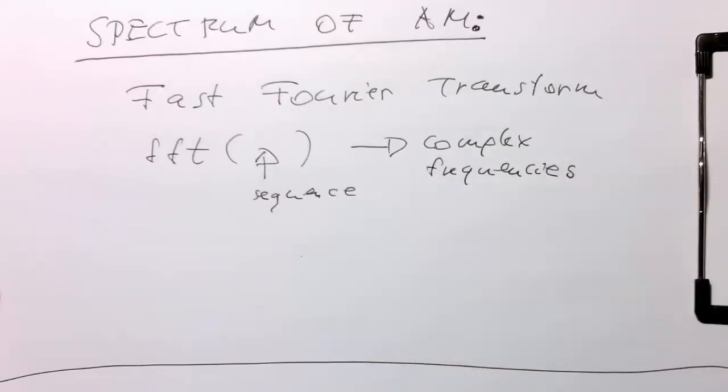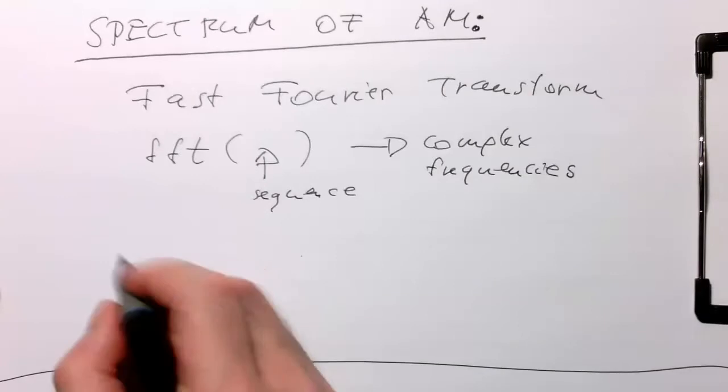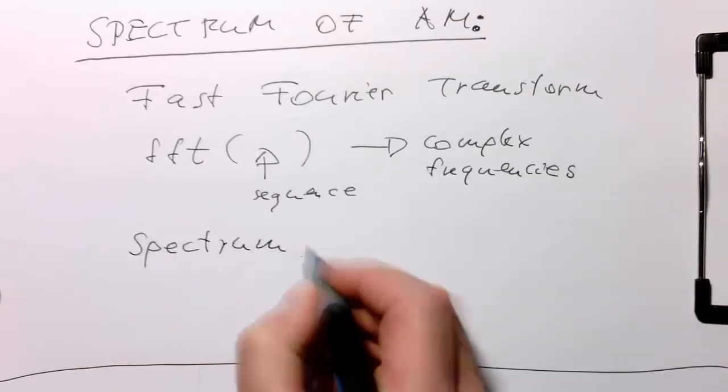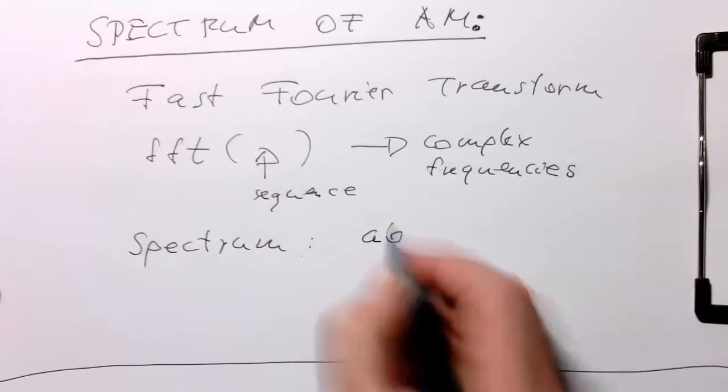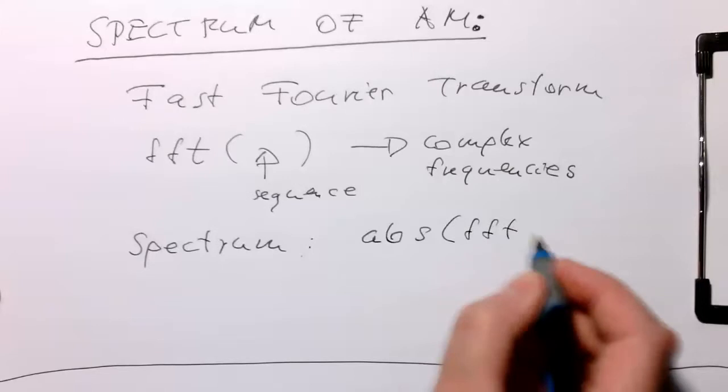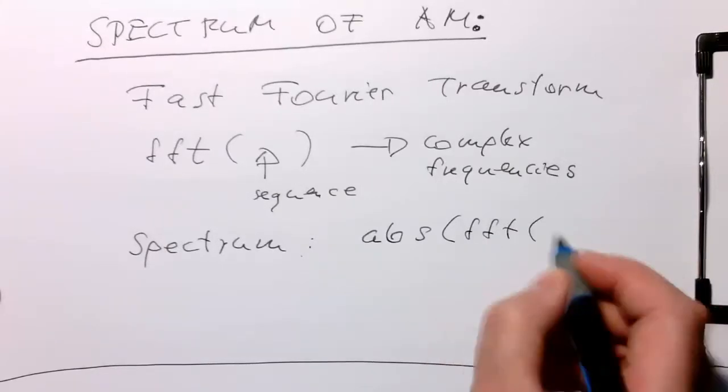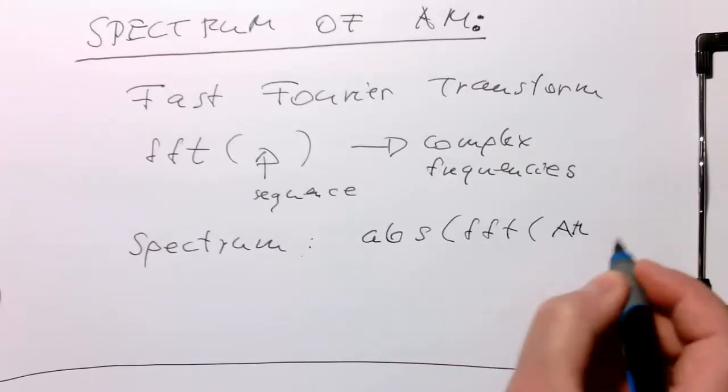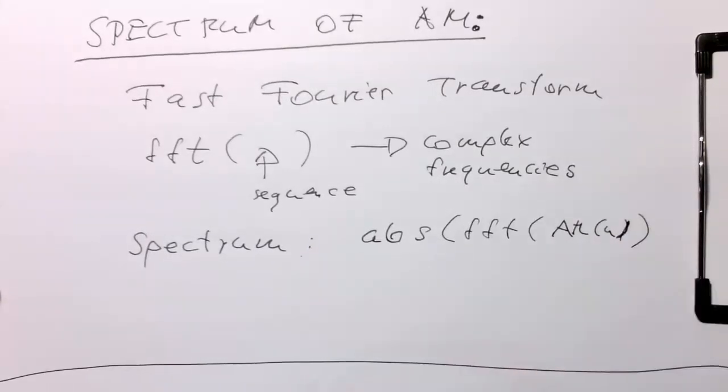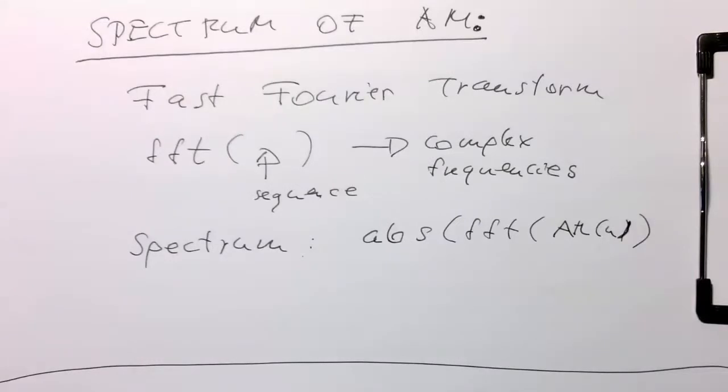And the output is our complex frequencies. So to get the spectrum out of this, we just take the absolute value of the FFT. And that's our AM signal here, AM of N because it's sampled. Okay, so let's do that.